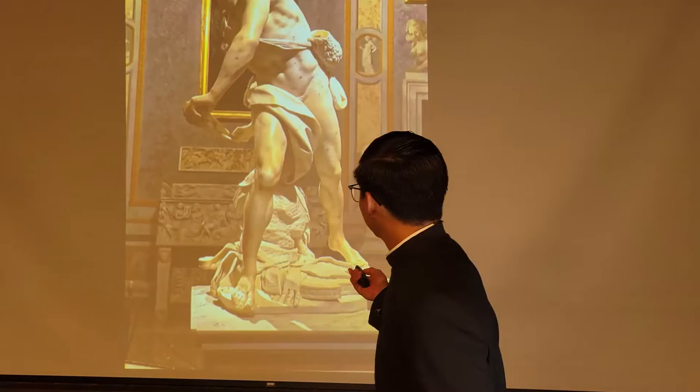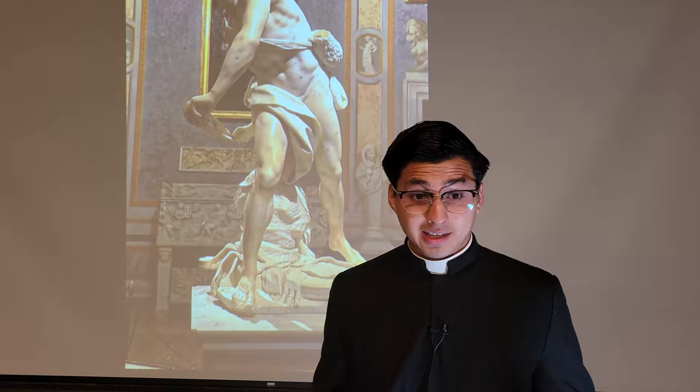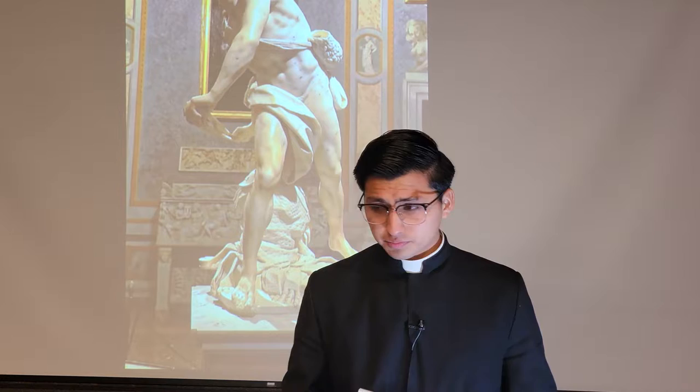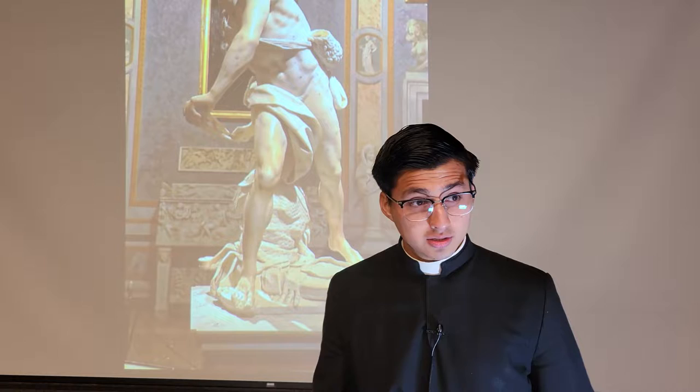We have to run to Galleria Borghese, and here we find this sculpture called David. It was sculpted in 1624, also by Gian Lorenzo Bernini. There were many representations of the biblical David by Michelangelo, Donatello, and Verrocchio, and this is not any more a self-contained expression, as we can see in Michelangelo and Verrocchio.